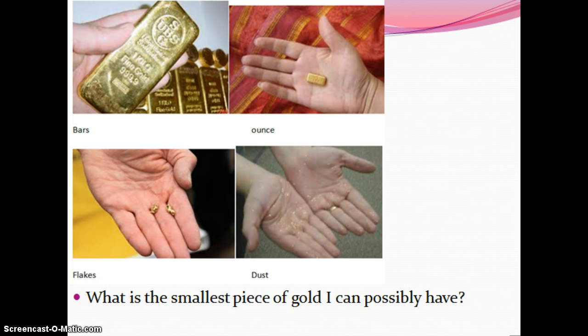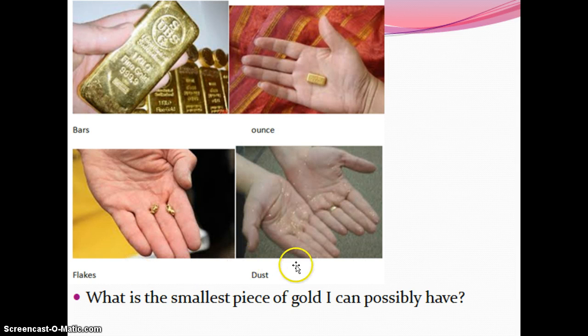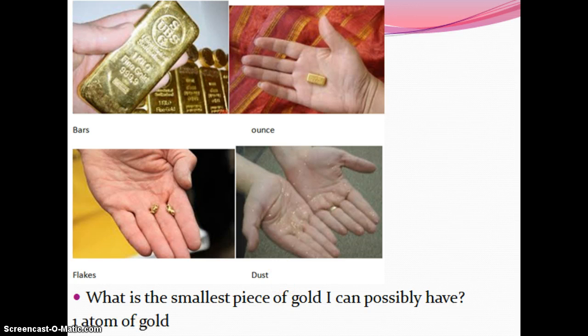What is the smallest piece of gold I can possibly have? You've heard of bars of gold, an ounce of gold, maybe flakes of gold, or even gold dust. I keep putting smaller and smaller pieces — what's the absolute tiniest piece of gold I could have? And it would be one atom.